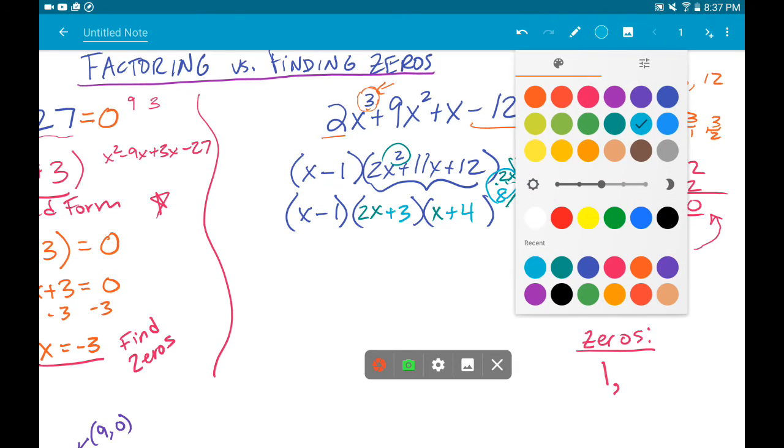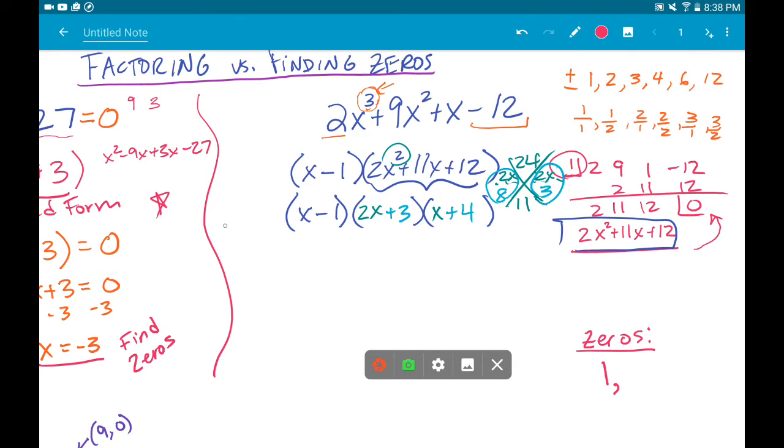If the question asked us to factor this, this is the answer for the factored version. I have one, two, three factors, which is what I expected.